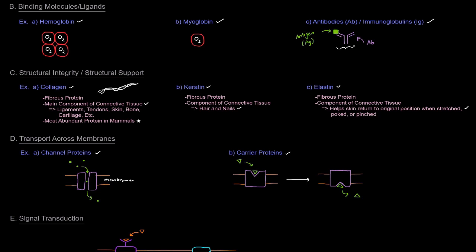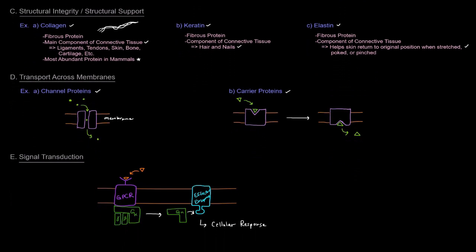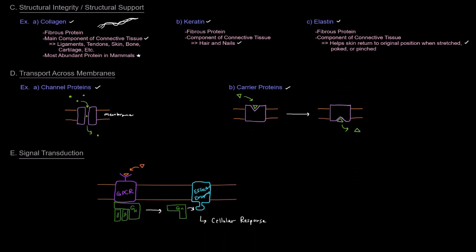Another thing is signal transduction. Signal transduction is the idea that some signaling molecule or some signal, like this little orange guy here, can show up on basically the outside of a cell and bind a membrane protein and then cause some sort of cellular response on the inside of the cell. Now, this involves a multitude of proteins.